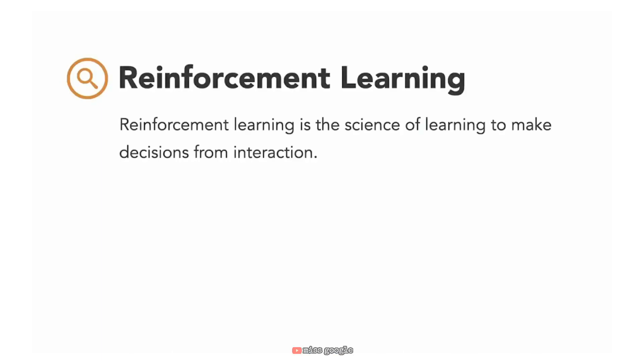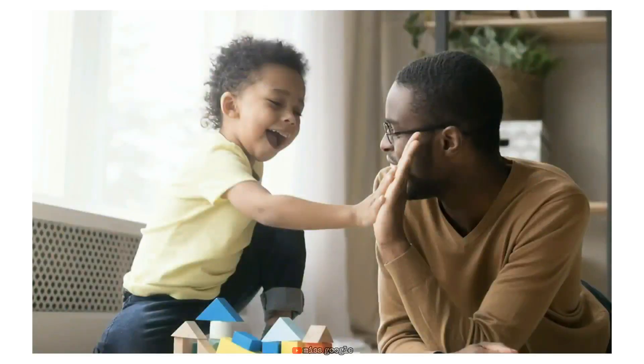Reinforcement learning is a science of learning to make decisions from interaction — the process of learning through feedback. It has many applications like autonomous driving, robotics, trading, and gaming. Reinforcement learning is very similar to early childhood learning: a toddler sees something, does something, gets positive or negative feedback, then adjusts his or her future behavior accordingly.